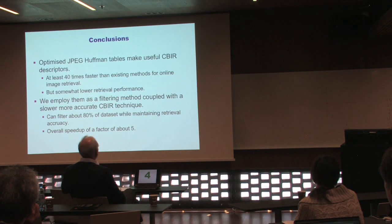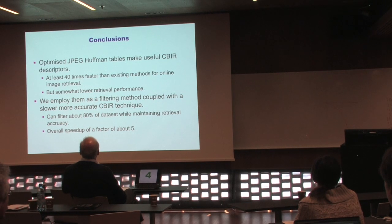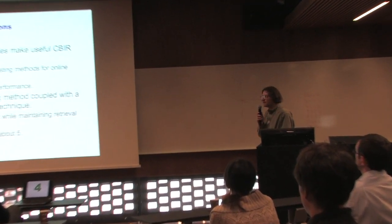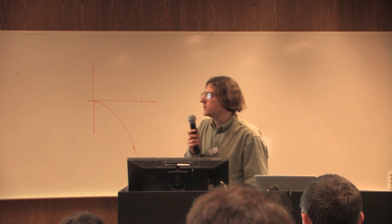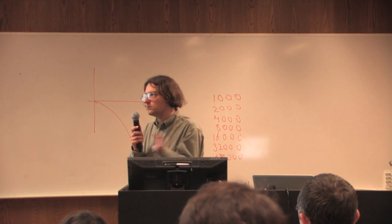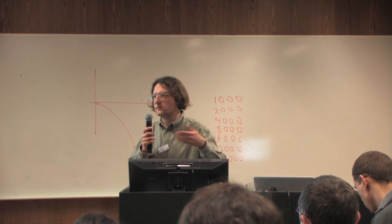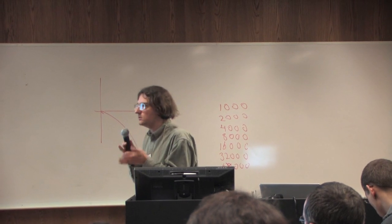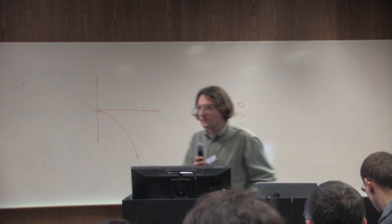In conclusion, we use tuned JPEG Huffman tables for image retrieval. They are stored directly in the JPEG header, enabling fast retrieval, though with somewhat lower accuracy. For this reason, we employ the method as a filtering stage, discarding about 80% of images in an initial pass, then running a secondary method on the remaining 20%. Overall, we achieve a speed-up of about 1 to 5 while matching the retrieval performance of the secondary method.